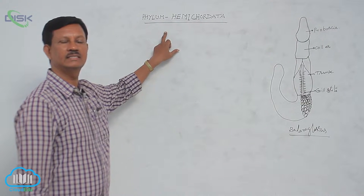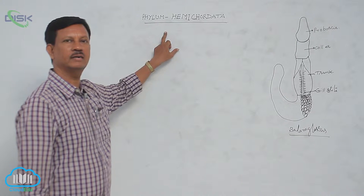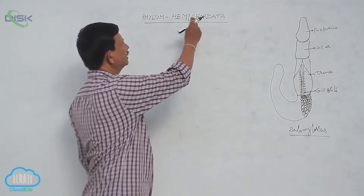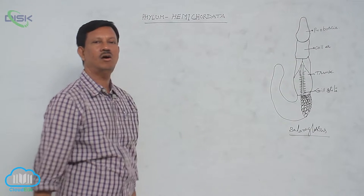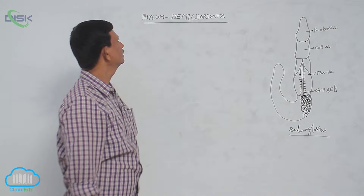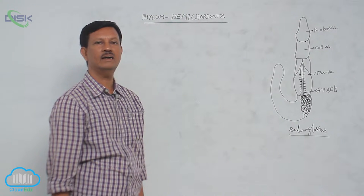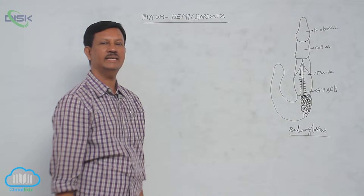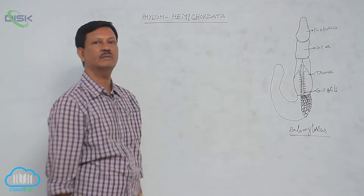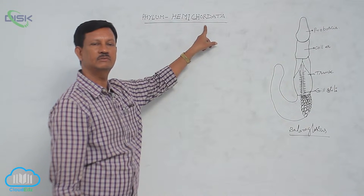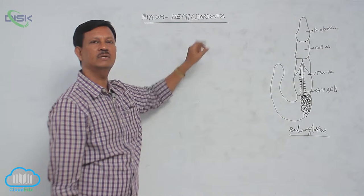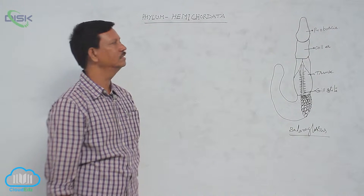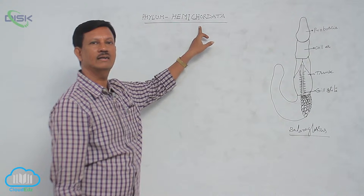Phylum Hemichordata is the last phylum of the non-chordata, or invertebrata. The exact meaning of hemichordata is 'half chordates' — hemi means half. Previously, hemichordates were included in the chordata, but recently they were removed and placed in the non-chordata due to the absence of a true notochord. Chordata includes animals in which a notochord is present in the body.